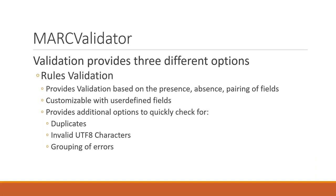Within the validation tool, for the rules the tool allows you to set validation rules that look for the presence, the absence, the pairing of fields, fields that are deprecated, length of subfields within control values. So in 007 or 006, within a particular format, it checks if the field matches the length. It also provides options for customizing what data you want to output in the report through user-defined fields, as well as options to quickly check for duplicates, invalid UTF-8 characters — which is new — and then allowing you to group different types of errors together so you get different kinds of outputs within your reports.